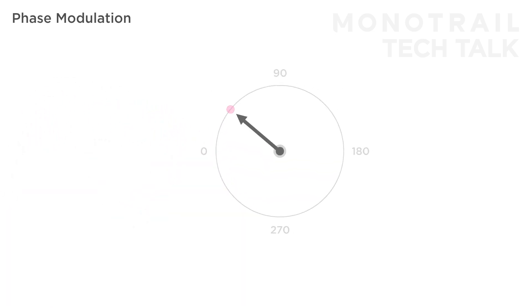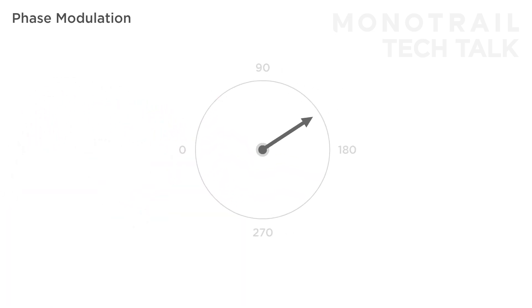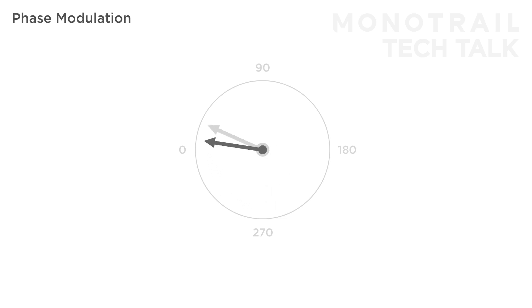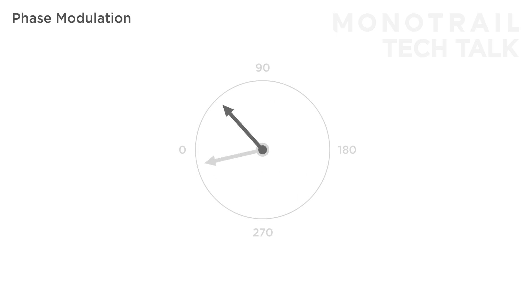When applying phase modulation, for example with another sine wave, the phase is modulated back and forth relative to the position where it would have been without modulation, effectively changing the rate with which the point moves around the circle. Of course this can be done subtly or with more drastic effects. Visualizing the resulting waveforms is above my pay grade, but more importantly it sounds like this.